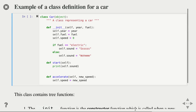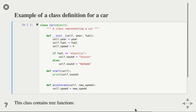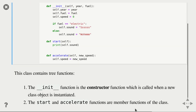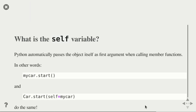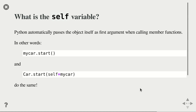One thing to note in contrast to normal functions is that class functions always take self as a first argument. You can see both the constructor, start, and accelerate all have self. I'll explain what self does in a second.